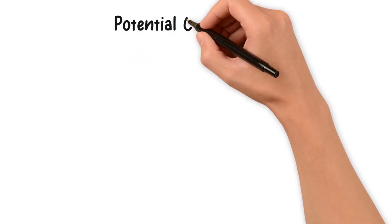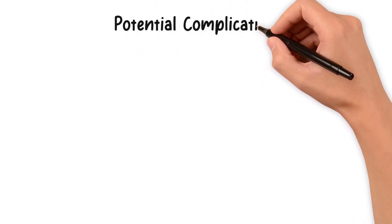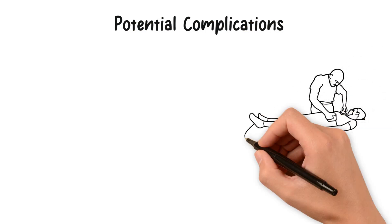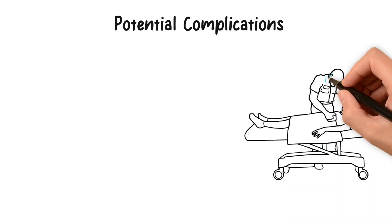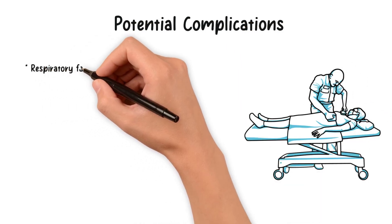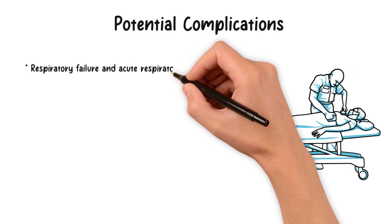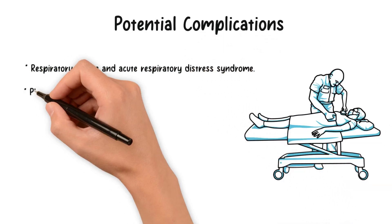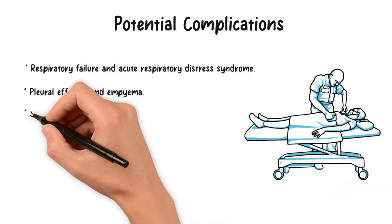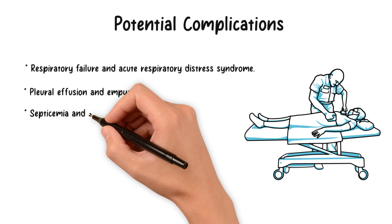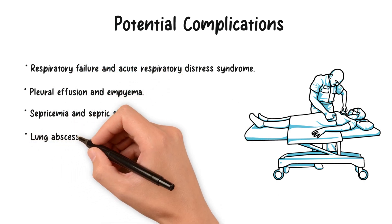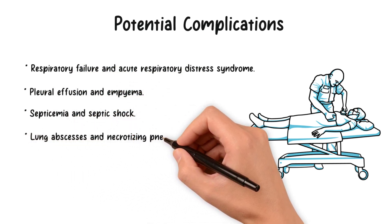Pneumonia can lead to various complications, especially in severe or inadequately treated cases. These include respiratory failure and acute respiratory distress syndrome, pleural effusion and empyema, septicemia and septic shock, and lung abscesses and necrotizing pneumonia.